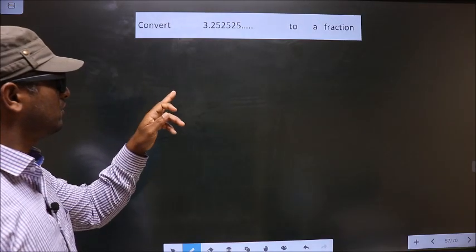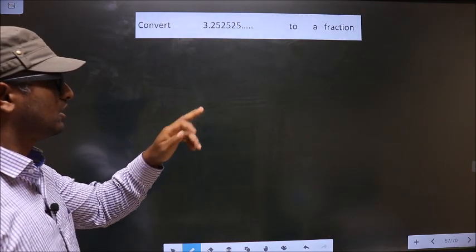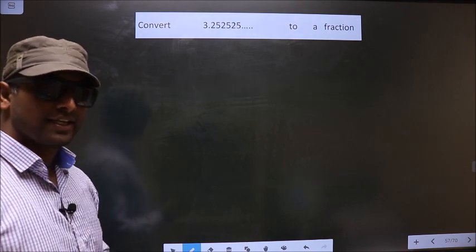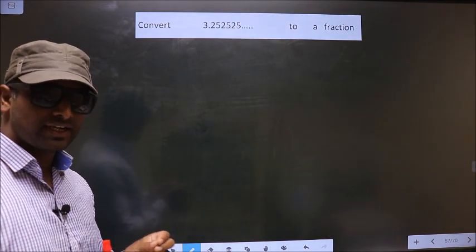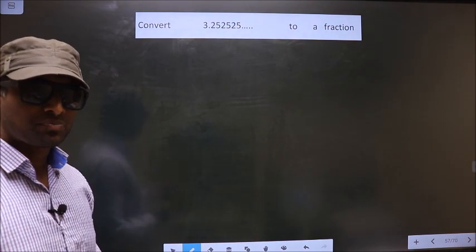Convert 3.252525 and so on to a fraction. Here we have to convert a recurring decimal to a fraction. How do we do it?